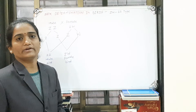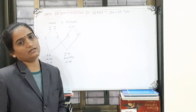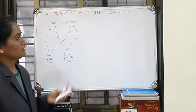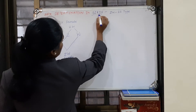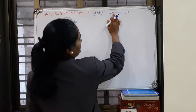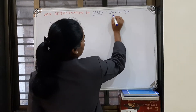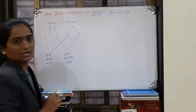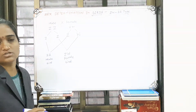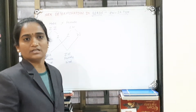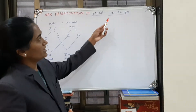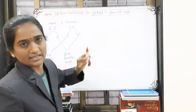In the next topic, sex determination in birds: in the case of birds, the sex determination is of the ZW/ZZ type. In MCQ or very short answer questions, you may be asked: what is the type of sex determination in birds? The answer is ZW/ZZ type.